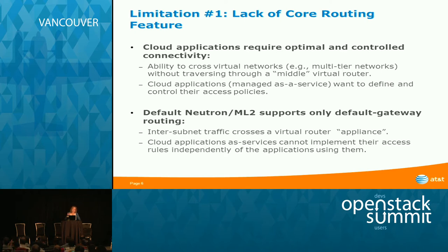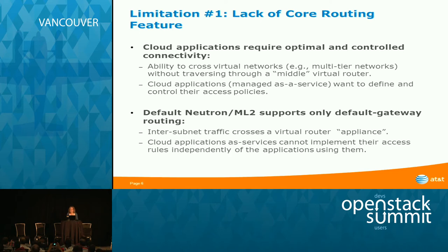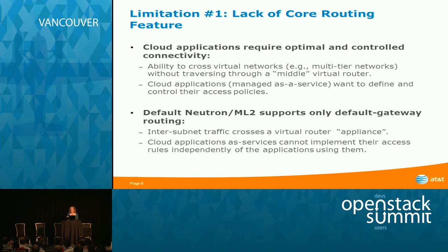What is needed is what default Neutron doesn't do. Cloud applications require optimal and controlled connectivity. Optimal connectivity means you'd like to traverse from network to network without going to a middle virtual router. Even with DVR — distributed virtual routing — the traffic still has to go through that router. It's switching and routing, but the routing is not native. I was in the DVR talk yesterday and it's implemented but quite complex — the Linux appliance is still there as a router.